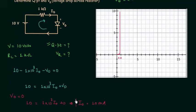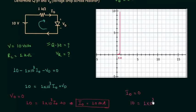Now we will find Vd when Id is equal to 0. Substituting Id = 0, we have 10 equals 1×10³ × 0 plus Vd, so Vd is simply equal to 10V.